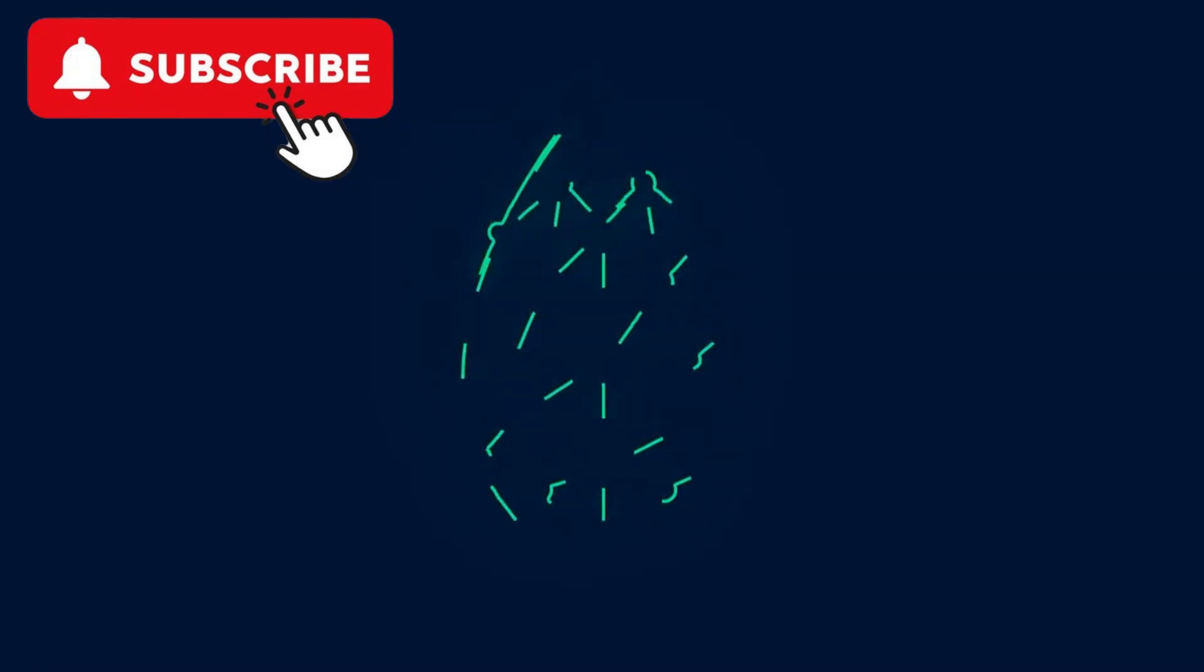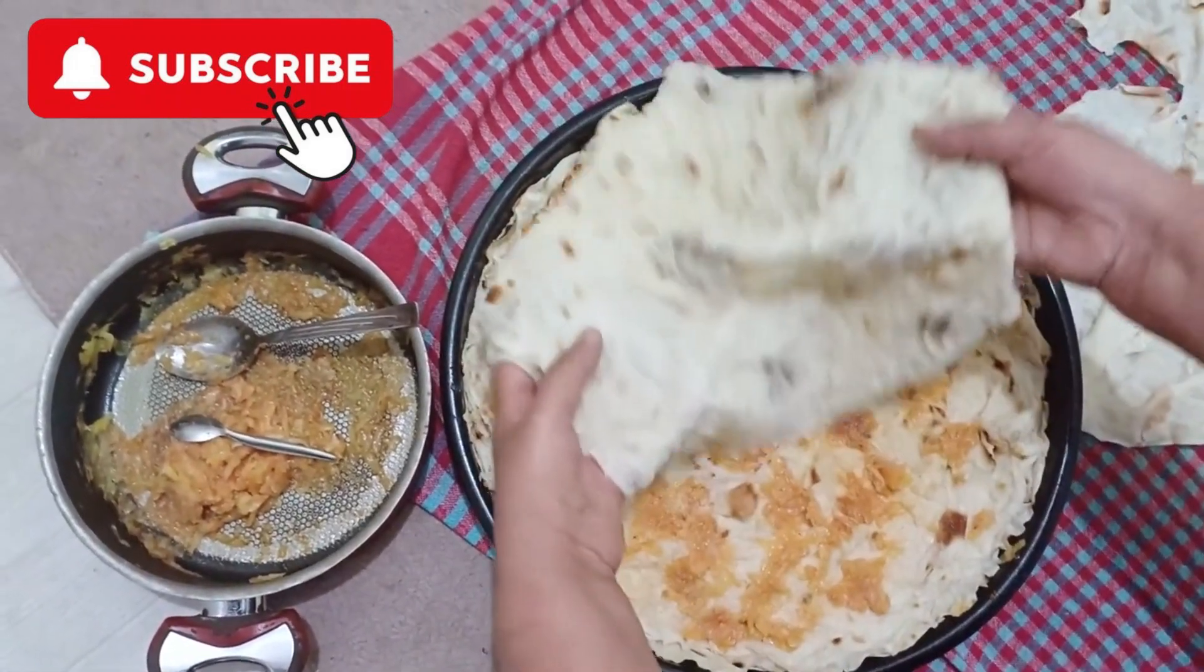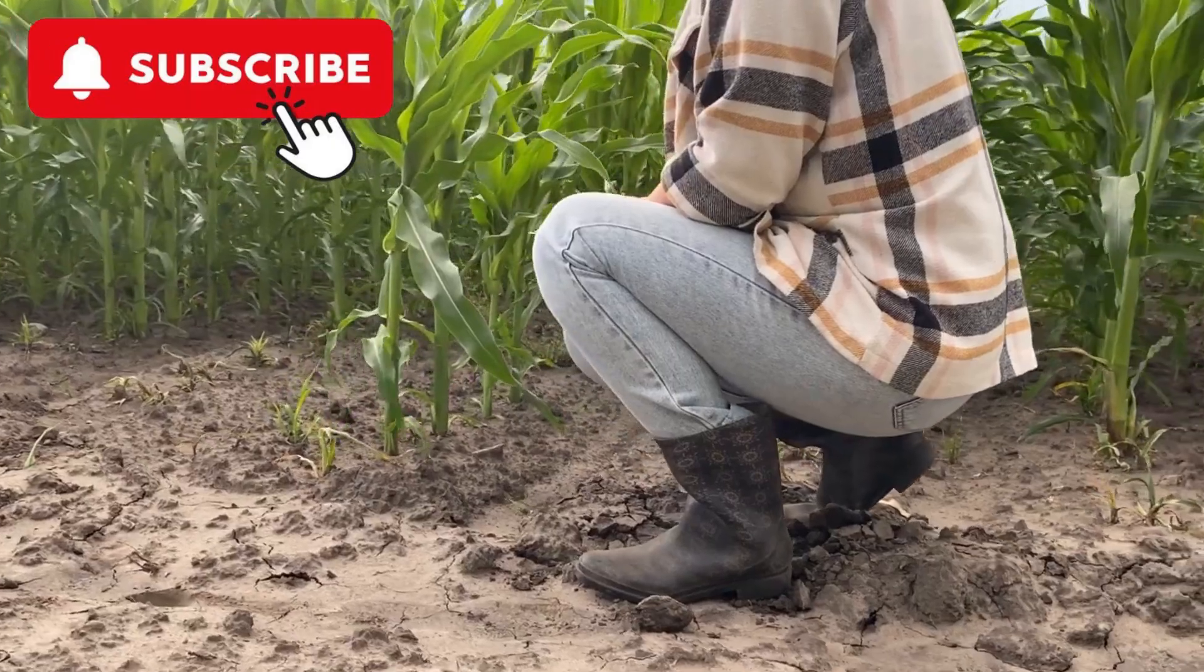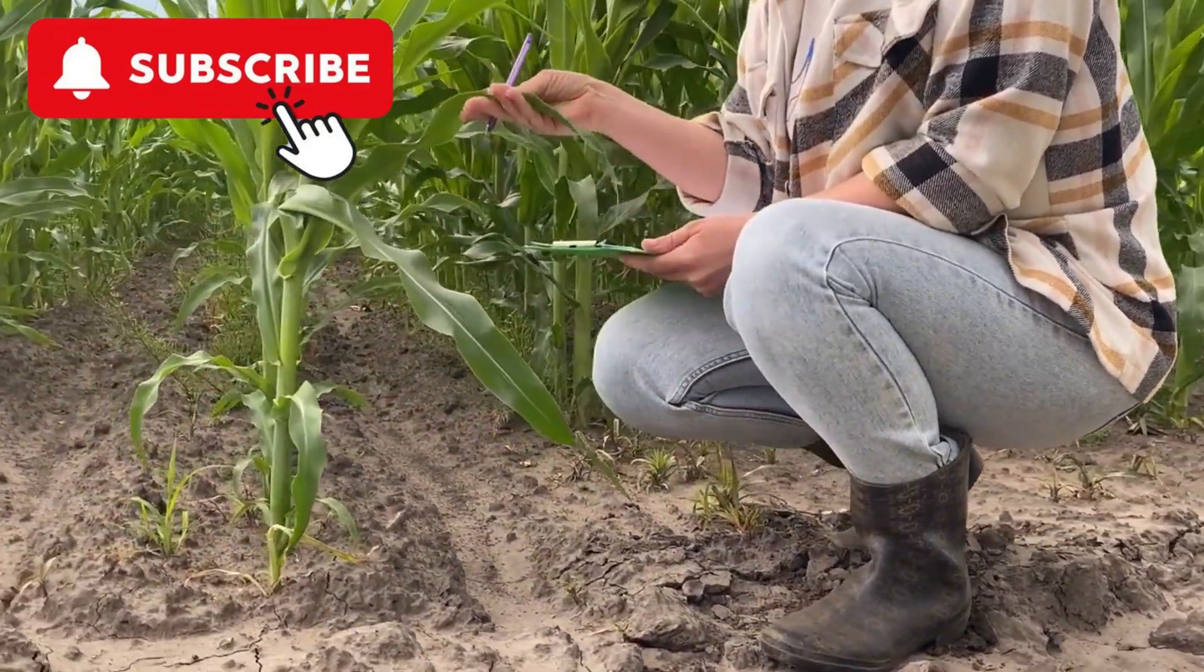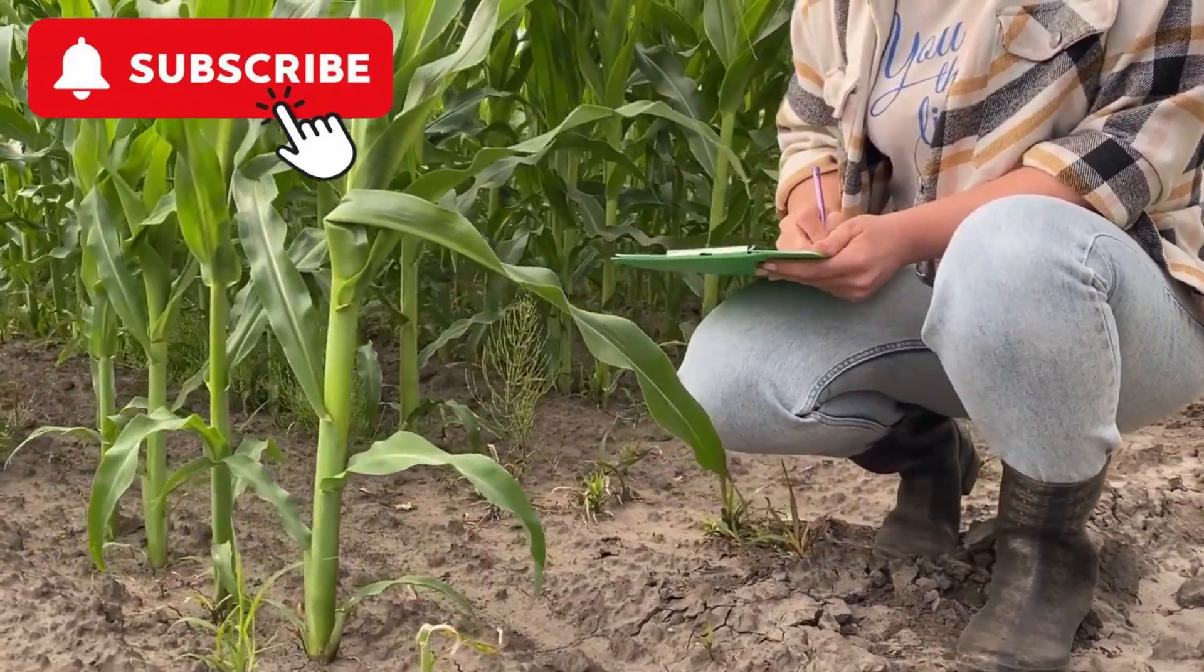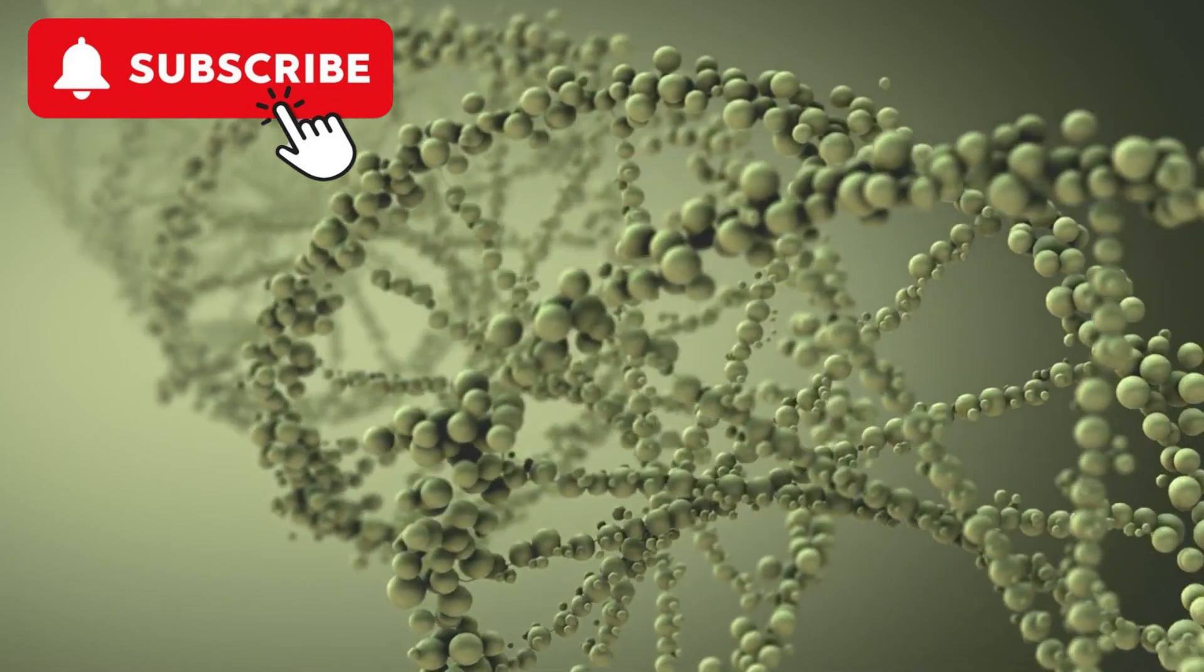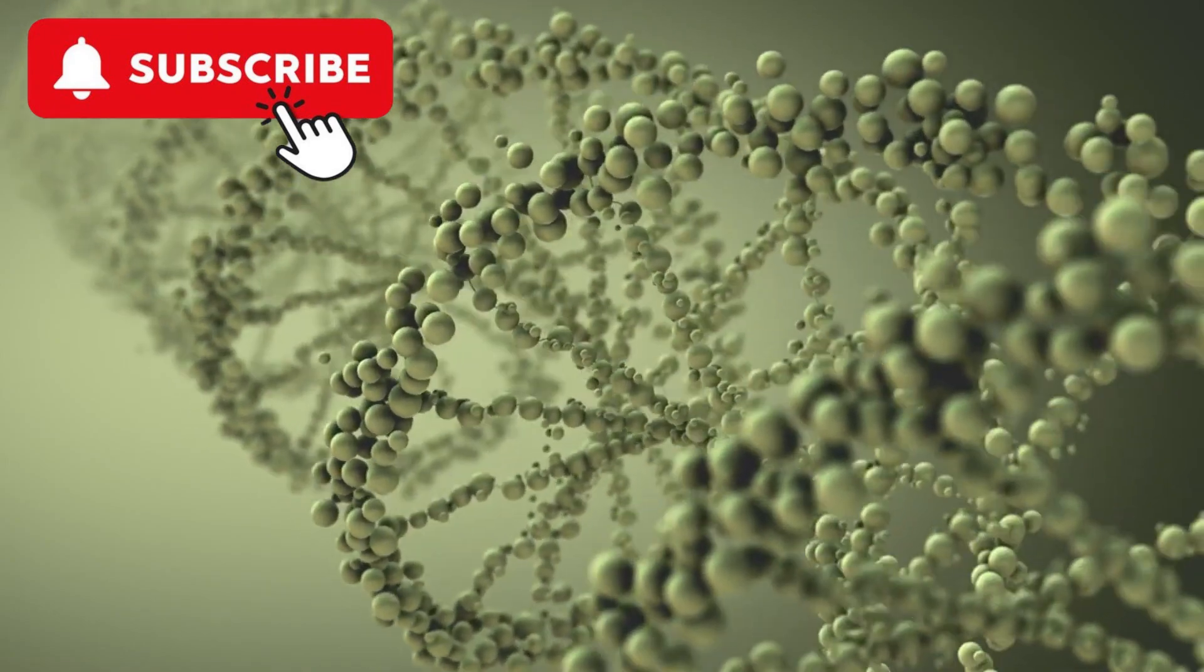Evolution of biotechnology. Biotechnology has ancient roots, with early applications including the use of yeast for fermentation and bread and alcohol production. The 20th century saw the emergence of industrial biotechnology, characterized by the mass production of antibiotics, vitamins, and other biochemicals. The discovery of the structure of DNA in 1953 by Watson and Crick laid the groundwork for molecular biology, leading to the development of genetic engineering techniques.